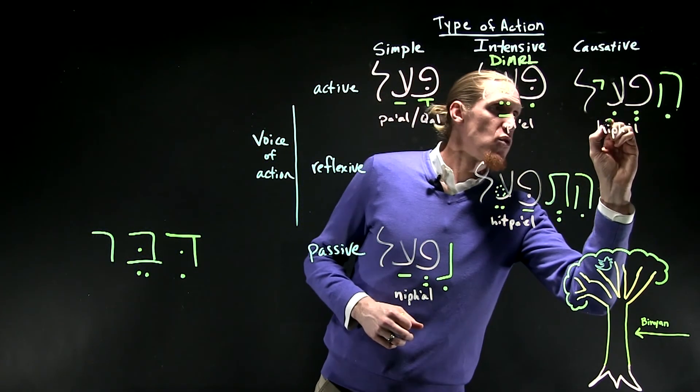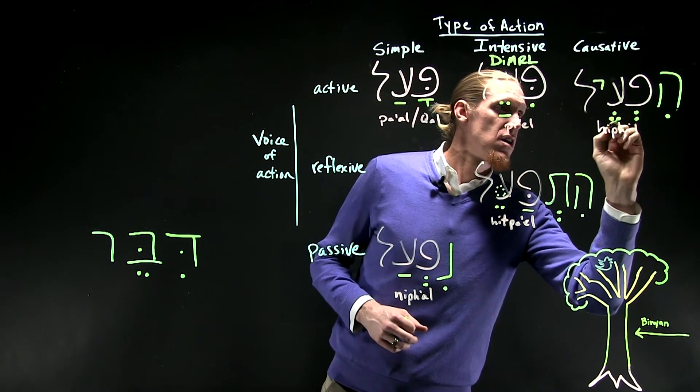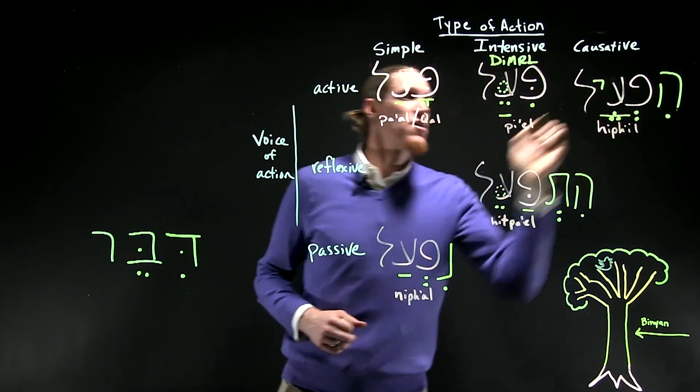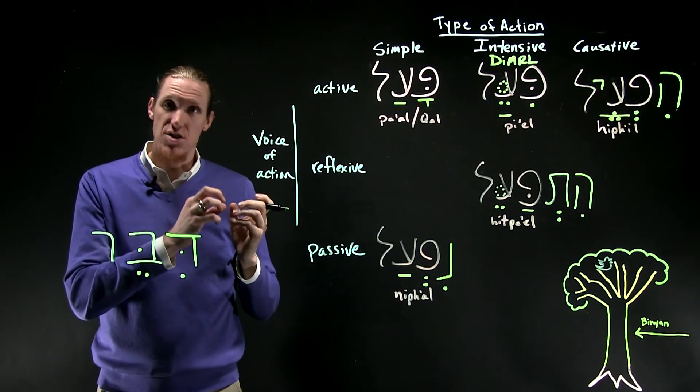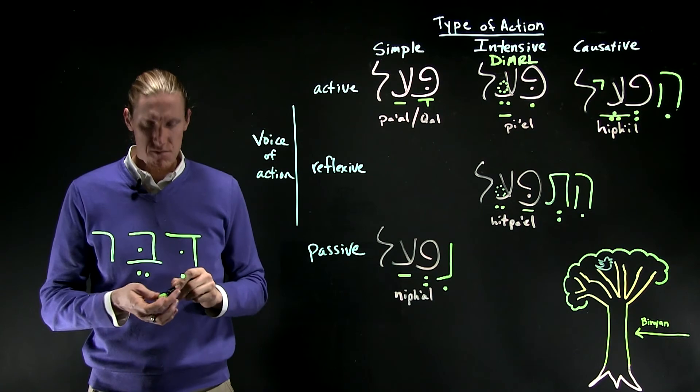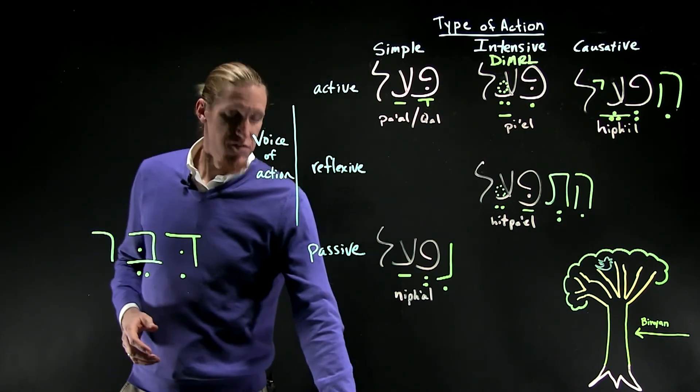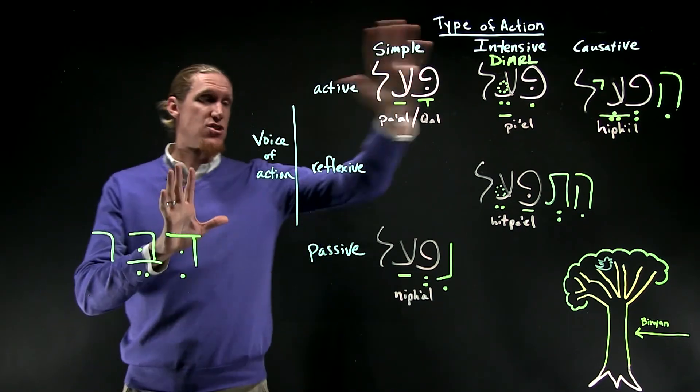In some forms, that hirik-yod between the second and third root letters is shortened to a tsere.